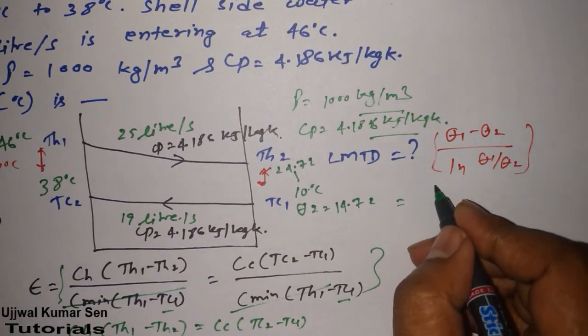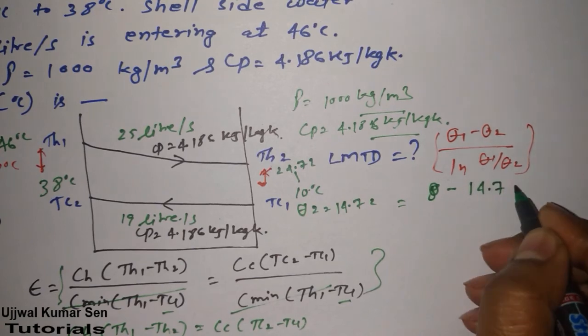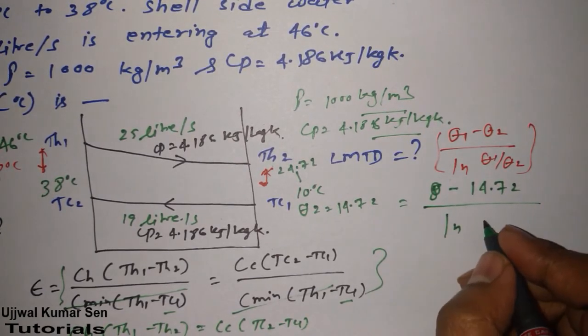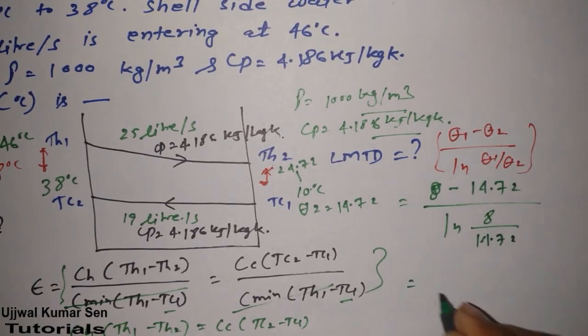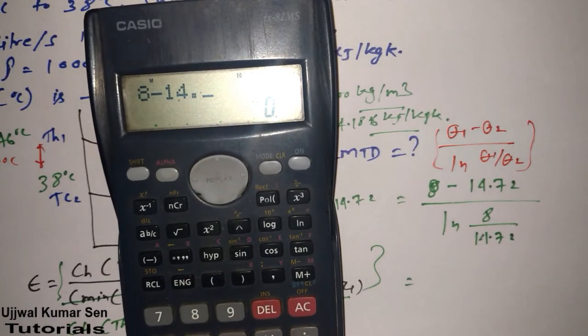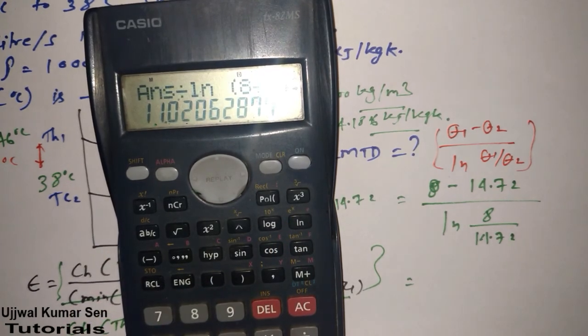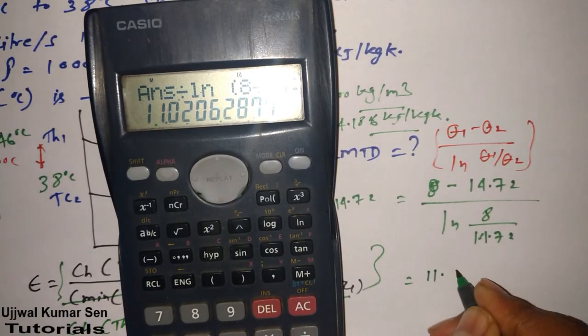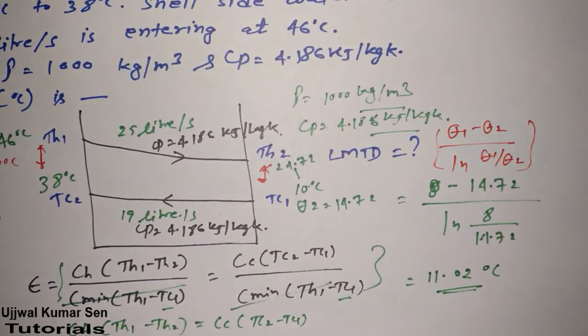So what is theta 1 basically? 8 minus 14.72, natural log theta 1 is 8 and theta 2 is 14.72. Now find out this. 8 minus 14.72 division natural log 8 division 14.72. So it's 11.02. Yeah, so it's 11.02 degree Celsius is the LMTD for this question.